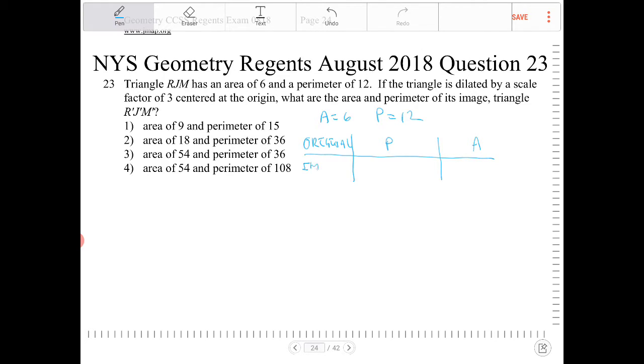The image after a dilation of k is going to have the perimeter be P times k, so we're multiplying the original perimeter by a factor of k. And the original area is going to be multiplied by a factor of k squared, so the image will have an area of A times k squared.